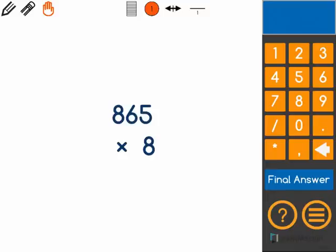This math problem asks us to multiply 865 times 8. I'm going to use a standard algorithm to solve this problem. We always start in the 1's place, and we are going to move across as we go.